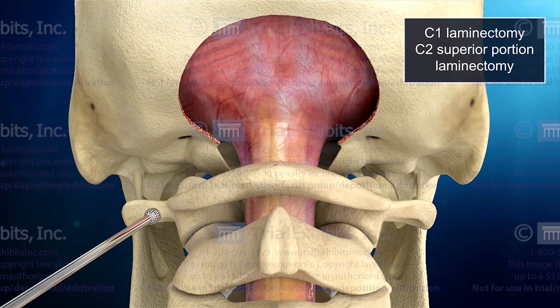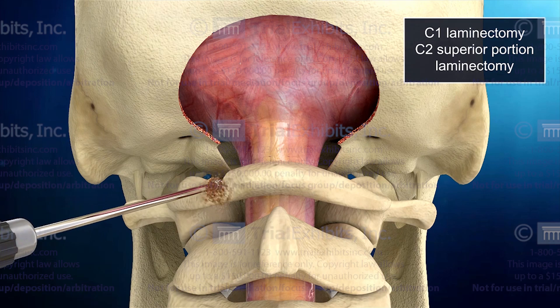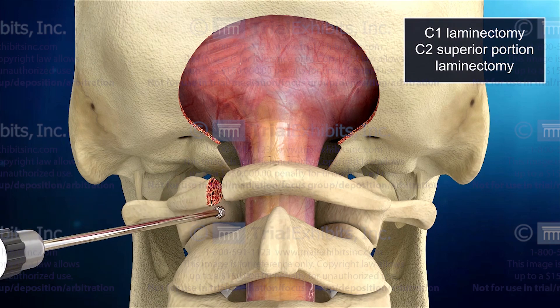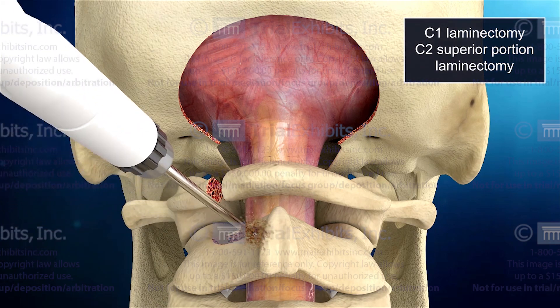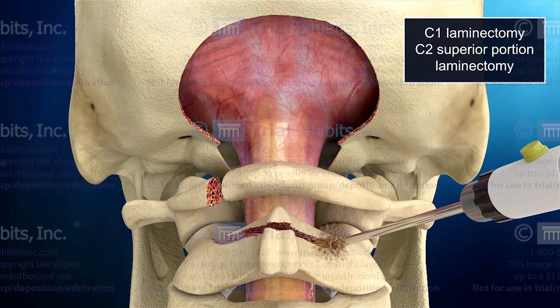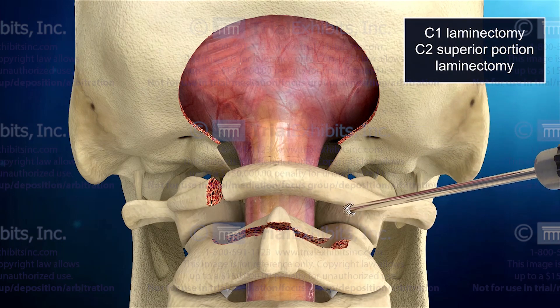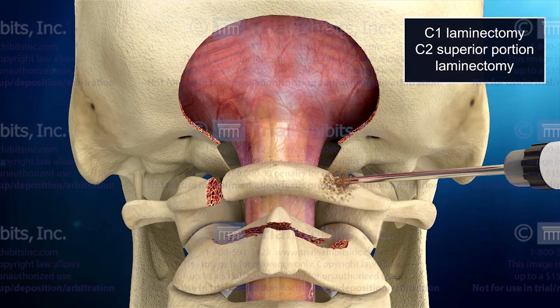A similar technique is used to explain the laminectomy part of the procedure, with the removal of additional bone in the upper cervical spine. This allows for the clear exposure of the dura covering the brain stem.